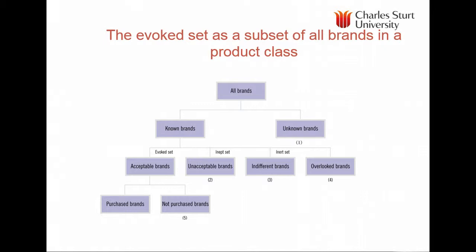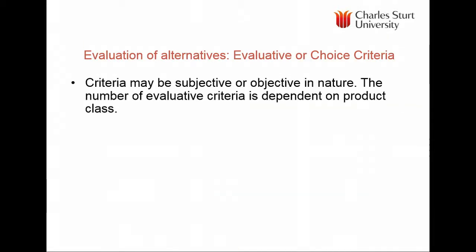If you are an unknown brand, you're simply not considered by consumers. If you're known, you're either unacceptable — the inept set — or indifferent — the inert set. From the acceptable brands, there may be brands purchased in the past or non-purchased brands. Criteria for selecting brands can be subjective or objective: the ANCAP safety rating is objective, fuel economy per litre is objective, but whether a consumer believes a car is economical, safe, or has good handling is very much subjective criteria.